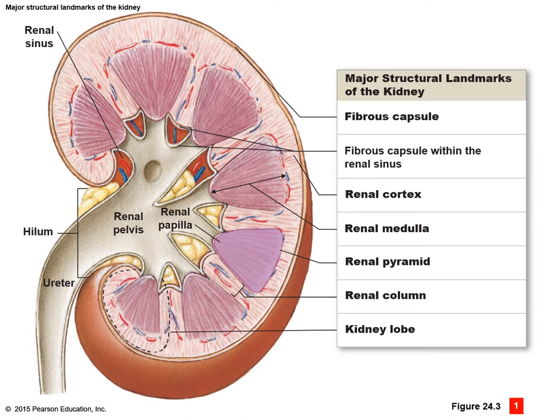Here we can see a nice diagram of a cross-section of the kidney. Starting with the fibrous capsule as the outermost covering, it leads into the renal cortex — the superficial layer. Just below this are triangular structures called the renal pyramids. Each pyramid has a point or tip that points toward the center of the kidney, called the renal papillae. The renal papillae drain into the minor calyx, then into the major calyx, and then into the renal pelvis. The renal column separates each pyramid, and a combination of renal column, renal pyramid, and parts of the cortex makes up what we call a kidney lobe.